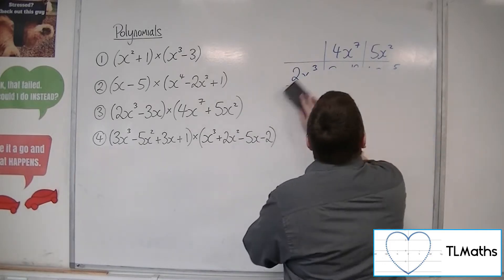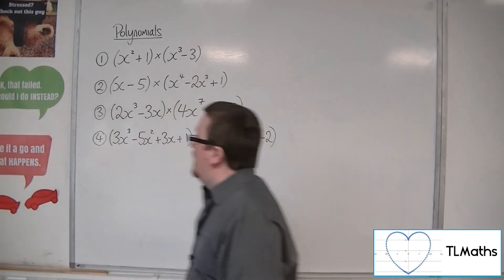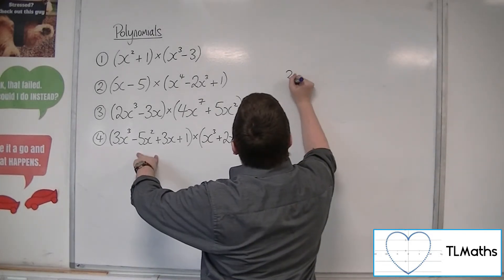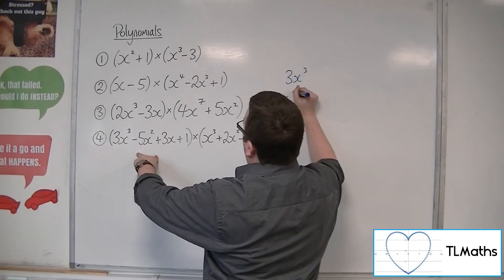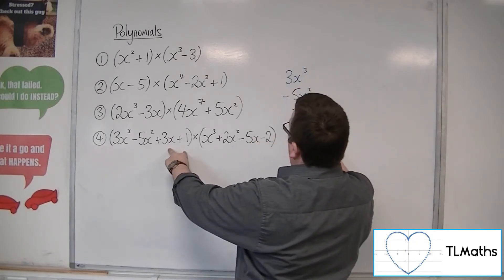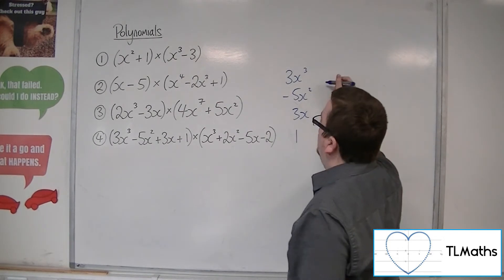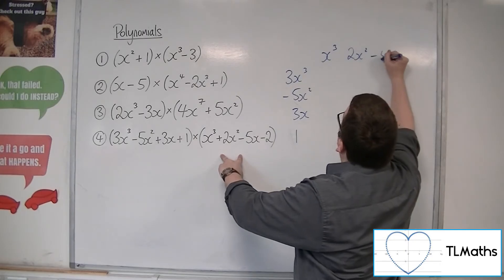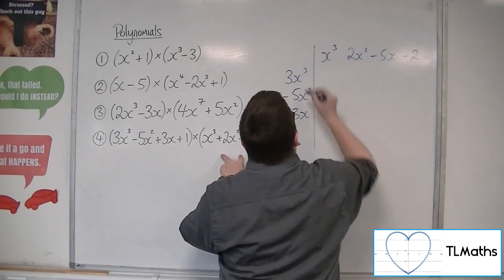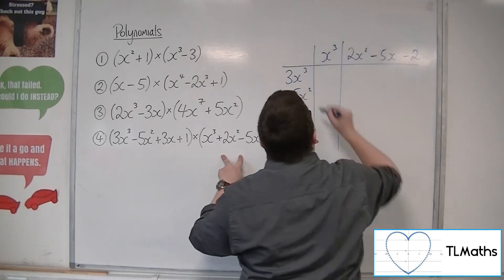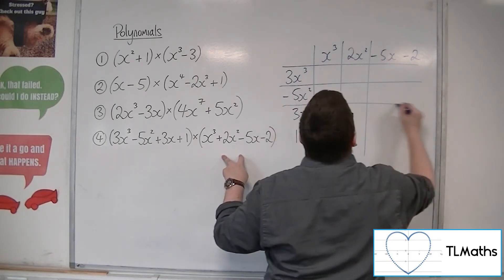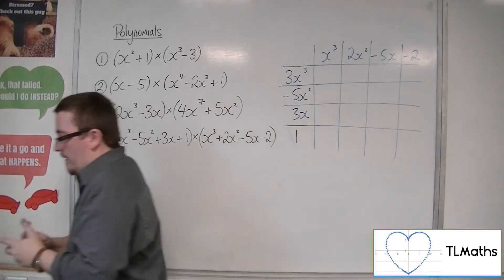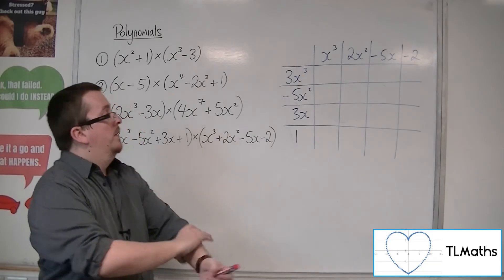For the last one, we've got 2 cubics multiplied together, so this will be quite a large grid. We've got 3x cubed minus 5x squared, 3x and 1, multiplied by x cubed, 2x squared, minus 5x and minus 2. I'm going to write my answers in red so I can keep track of them more easily.